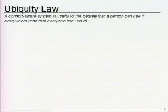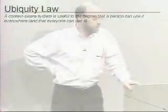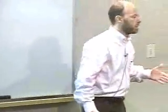The ubiquity law says that a context-aware system is useful to the degree that a person can use it everywhere and that everyone can use it. Ubiquitous computing takes as a given that it should be everywhere. What I'm saying here is that a context-aware system needs to be ubiquitous — otherwise, it doesn't really work.